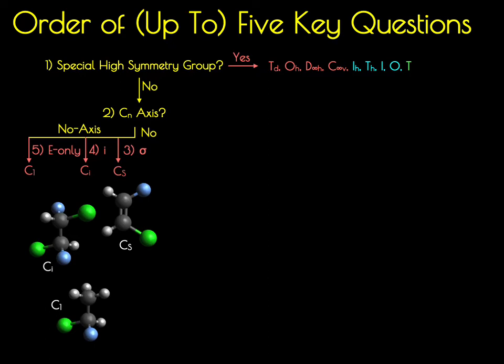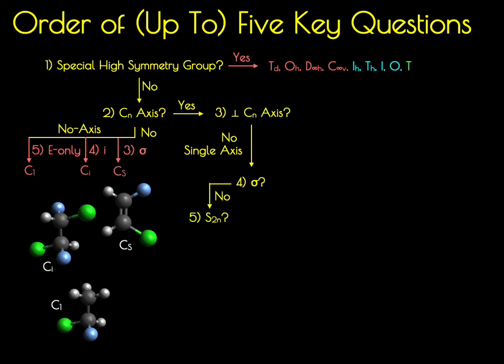If the answer to question 2 is yes — there is a rotational axis higher than C1 — then you ask the third question: in addition to that CN, is there a perpendicular rotational axis? If no, you're in one of the single axis point groups, either CN or S2N. From there, ask whether there is a mirror plane. If there isn't, ask if there's an improper rotational axis along the CN that corresponds to an S2N rotation. If yes, you're in an S2N point group.